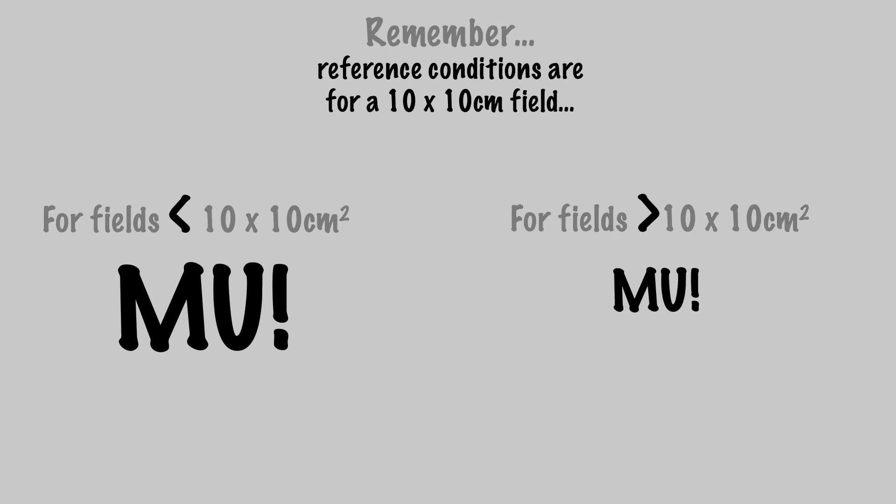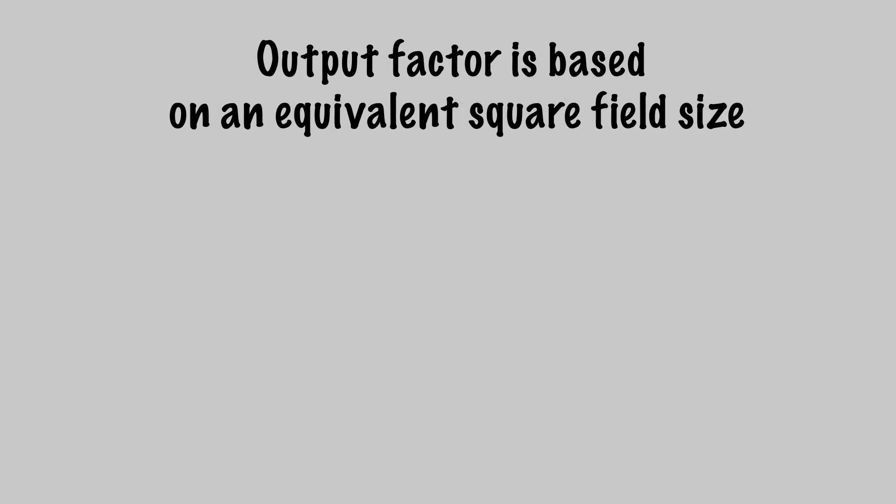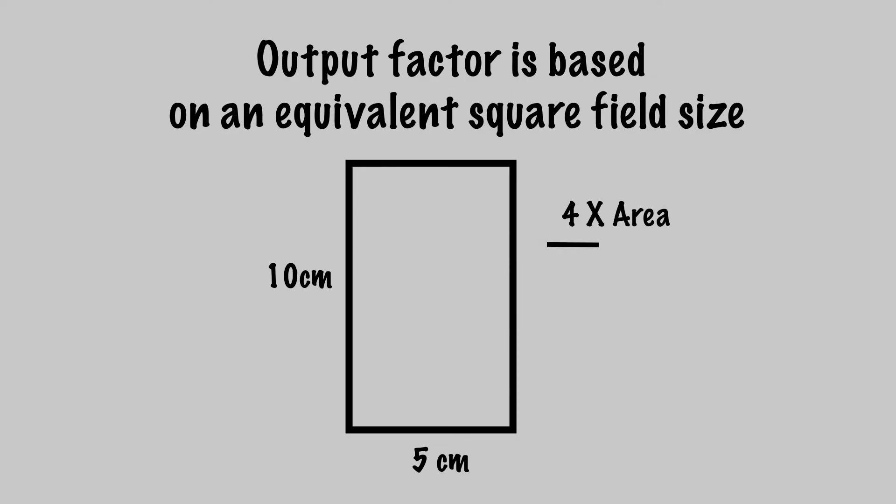But what if you don't have a square field? This requires the calculation of an equivalent square field size. Since the collimator jaws define a rectangular shape, we can calculate the field size as 4 times the area, all divided by the perimeter.